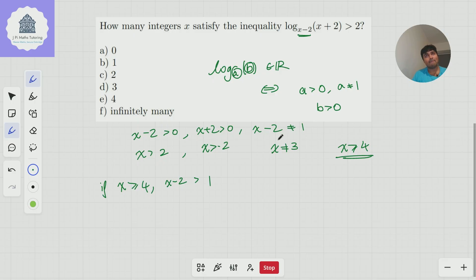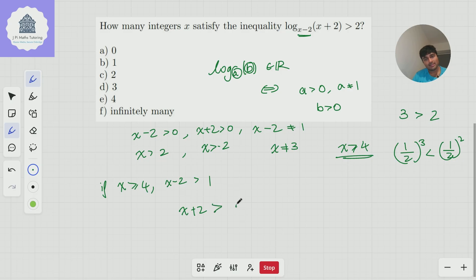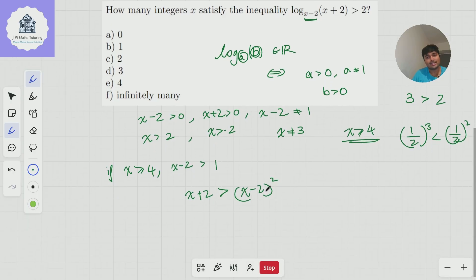What do I mean by that? Let's just take 3 is bigger than 2, for example. Now, if I was to do a half to the power of both sides, if I did a half cubed and a half squared, the inequality would flip. And that's because a half is between 0 and 1. However, since x minus 2 is bigger than 1, we can say that x plus 2 is bigger than x minus 2 to the power of 2 squared. And now we just get ourselves a quadratic inequality.